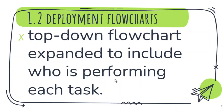The second type is the deployment flowchart. It is also a top-down flowchart, but it is expanded to include who is performing each task. So it goes top-down showing your first step, level one, step two, step three — and it indicates which department or person you need to go to, showing who is performing each task.